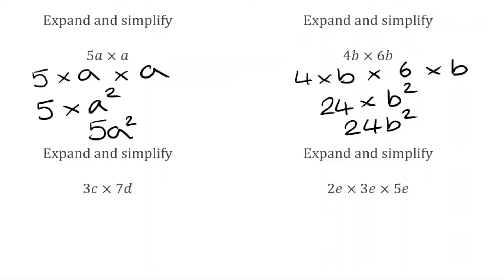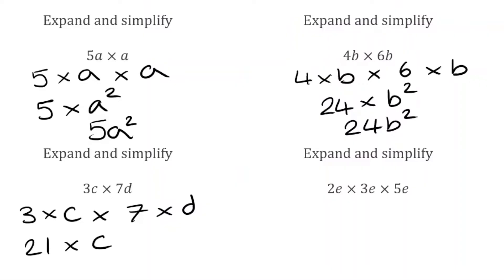For this next question we've got 3c — which means 3 multiplied by c — multiplied by 7d, which is 7 multiplied by d. Combining the numbers: 3 times 7 is 21. We're then multiplying by c and by d. We can't simplify those terms any further, so combining everything together, the final answer is 21cd.